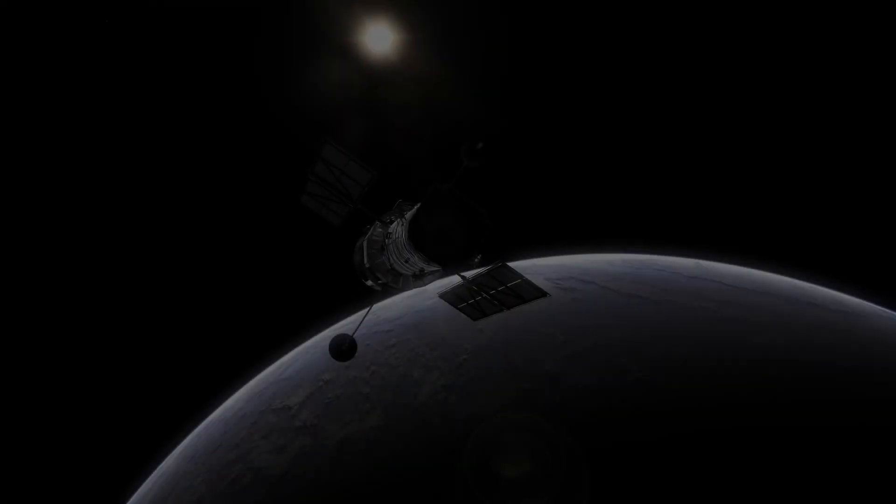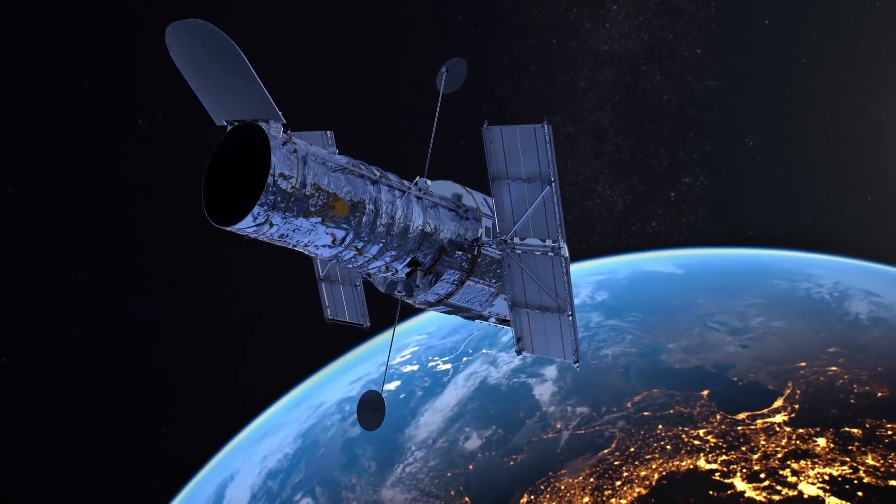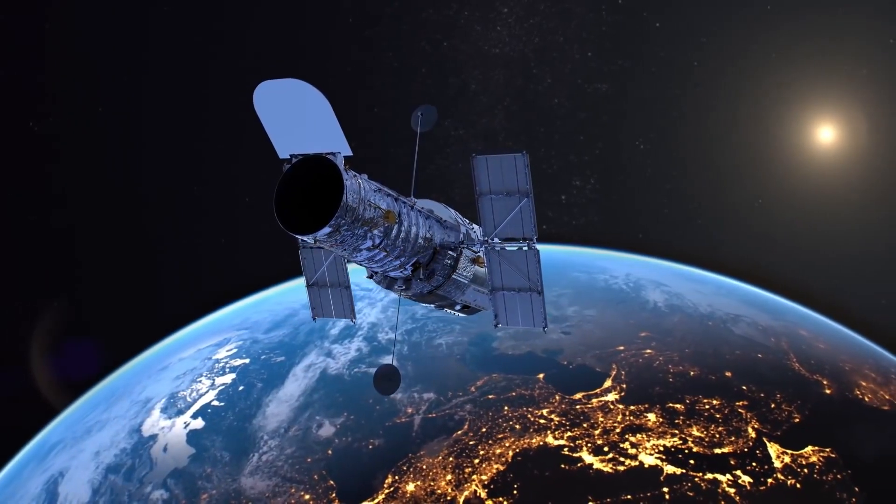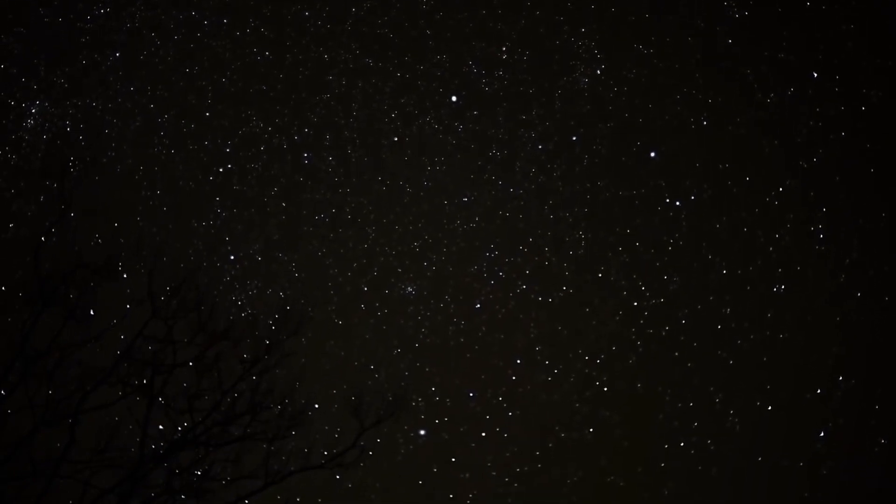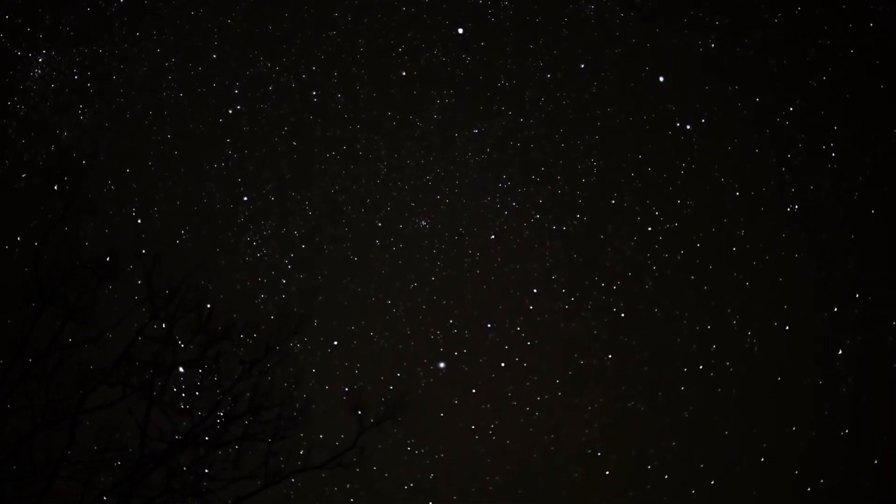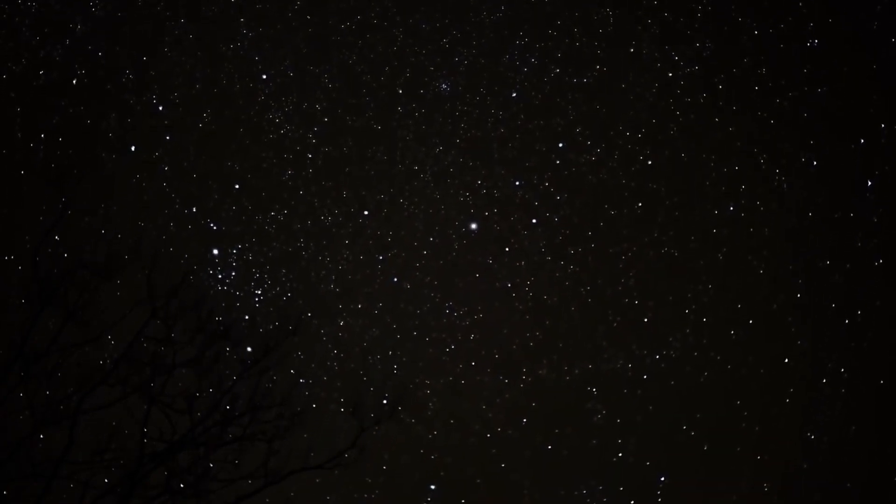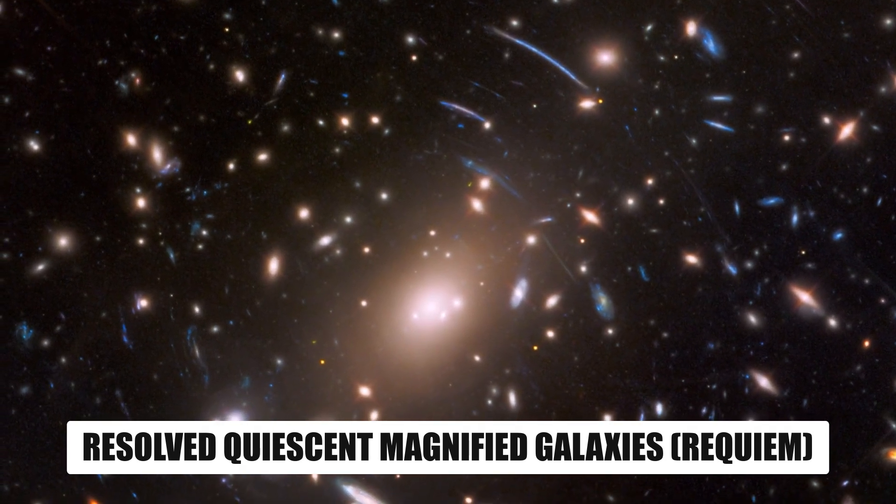The Hubble Space Telescope accidentally discovered the previous three sightings in its archived data in 2019, three years after acquiring the images. Gabe Brammer, an astronomer at Denmark's University of Copenhagen, stumbled upon the supernova while searching for unknown distant galaxies as part of an ongoing research program called Resolved Quiescent Magnified Galaxies, Requiem, which inspired the supernova's name.